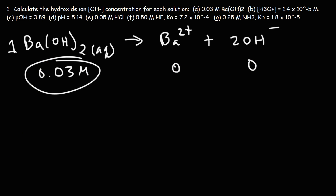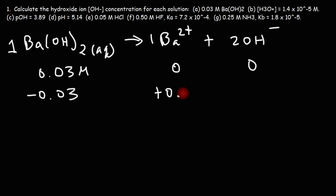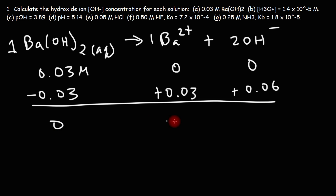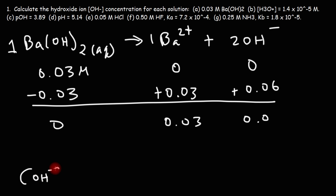it's going to dissolve and go to zero, decreasing by 0.03 M. The hydroxide will increase at twice the rate, going up by 0.06 M. So all you need to do to calculate the hydroxide concentration here is simply double this value. For part A, the hydroxide concentration is 0.06 M.